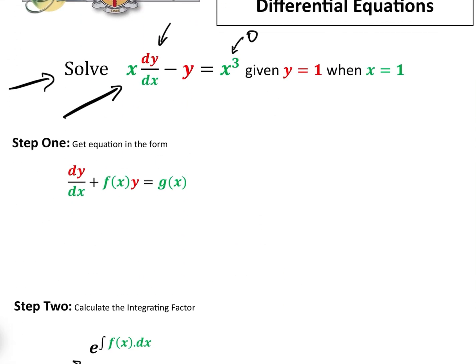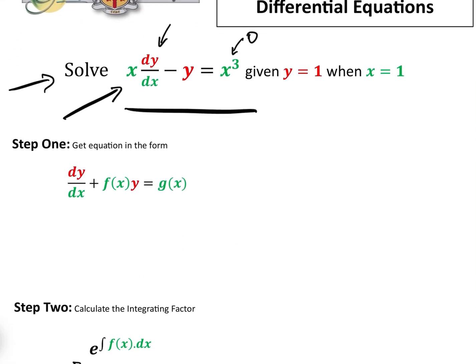So let's go back to the actual equation in hand here. x dy dx minus y equals x cubed, given that y equals 1, when x equals 1. Step one, get the equation into this form. Well, that's easy.